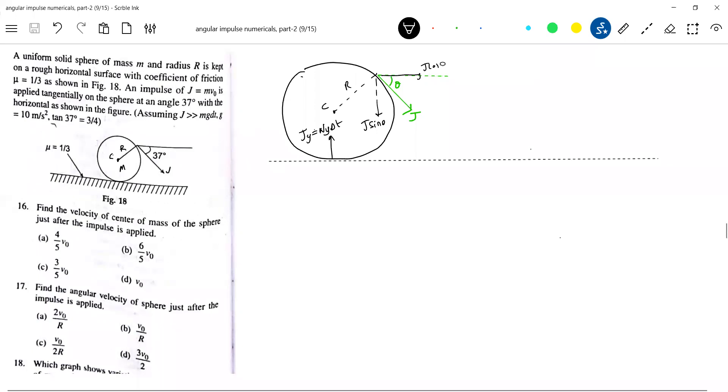So what does it mean? Though impulse acted, the sphere will not lose contact from the ground. That was the bracket term.